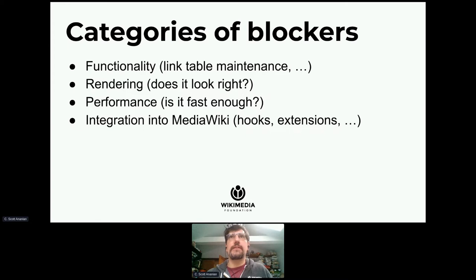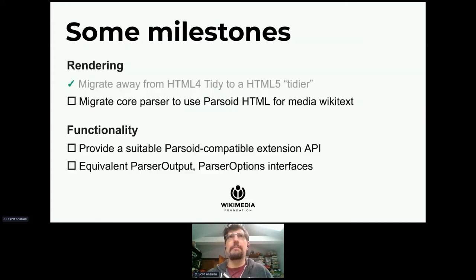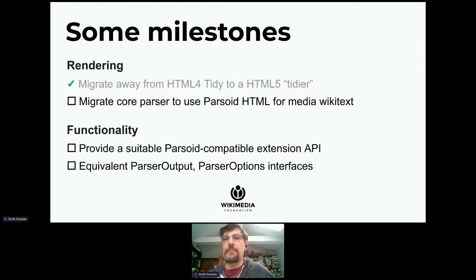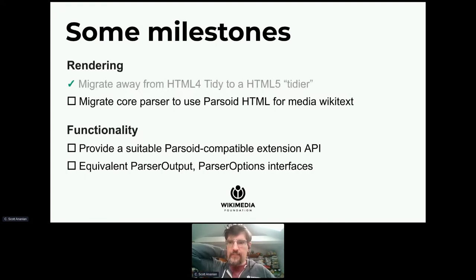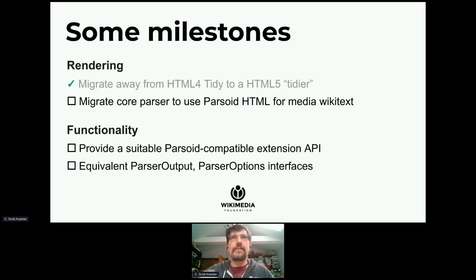Some milestones in that work: a major rendering milestone was switching from the old HTML4-based tidy mechanism to an integrated pre-builder based on HTML5. We actually removed the untidy output of MediaWiki entirely so that parser output is always well-formed and balanced now. That required resolving a lot of corner cases to bring the rendering of the legacy parser and Parsoid closer together. The next step is a similar migration for media output. We're also working on bringing us to parity with the legacy parser in the functionality aspect, initially by providing an improved extension API.